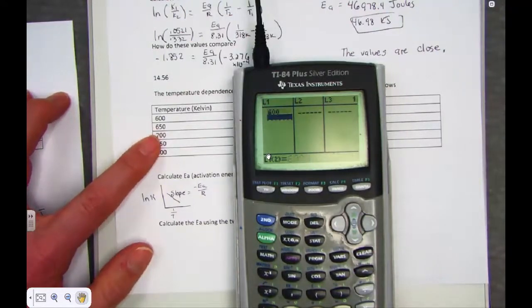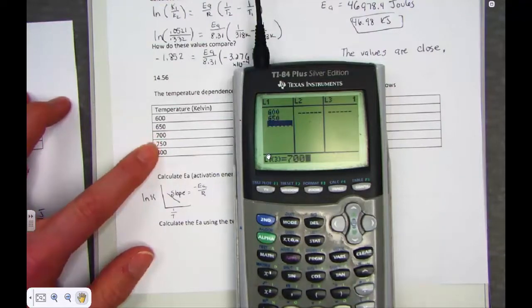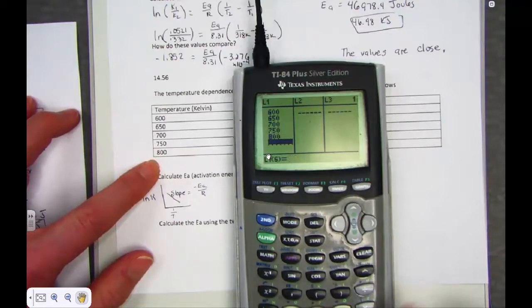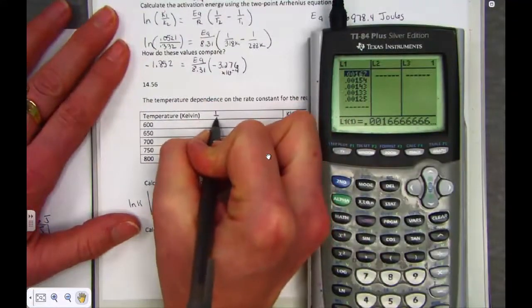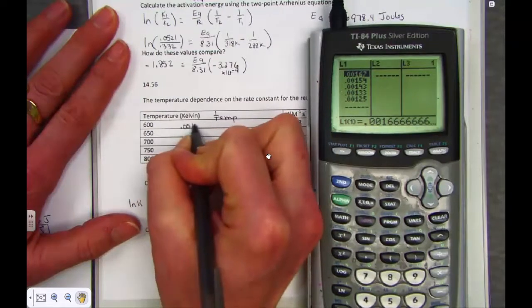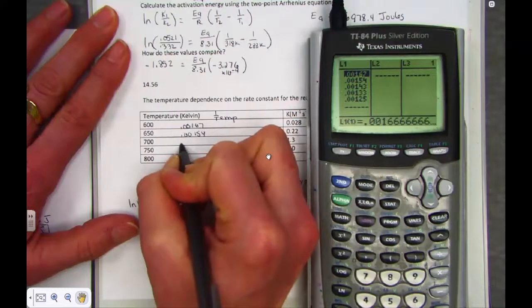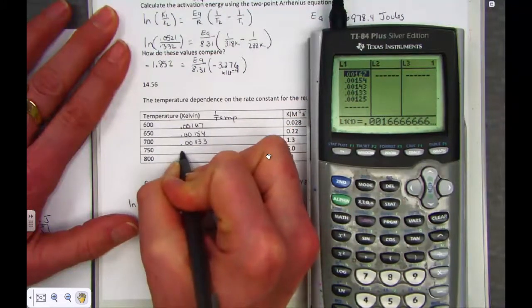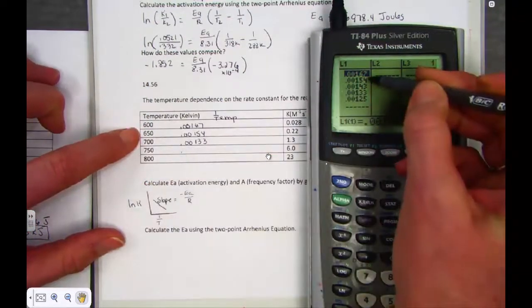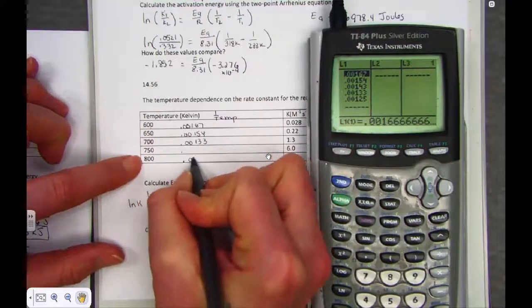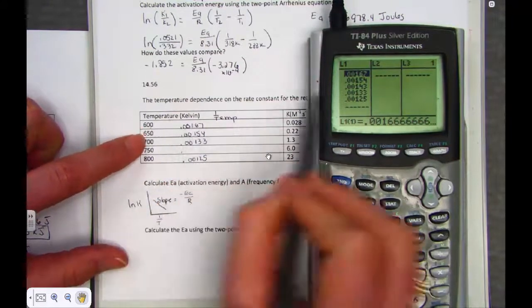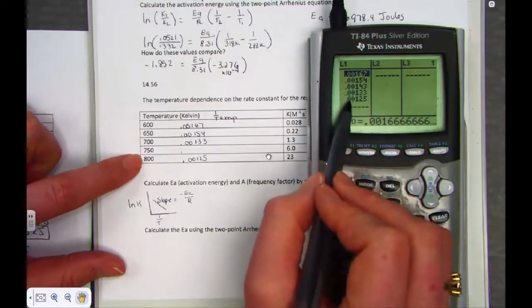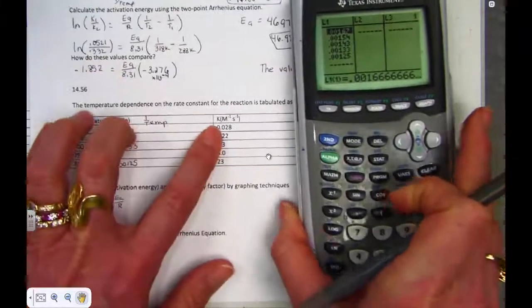So, what I'll do is just go back to my stats, clear my list out. Let's type in the temperatures as they appear: 600, 650, 700, 750, and 800. I'll turn them into reciprocals of Kelvin temperatures by taking 1 divided by list 1.